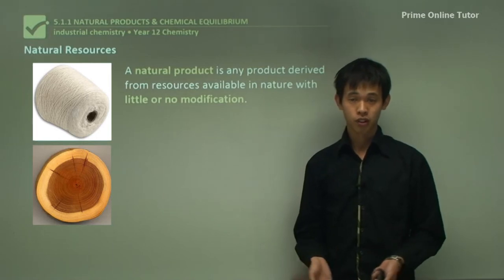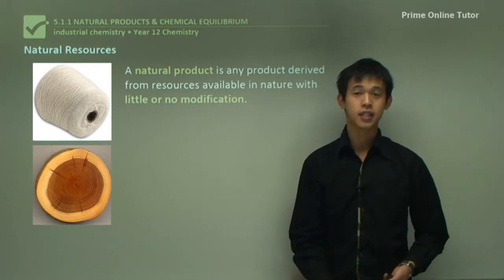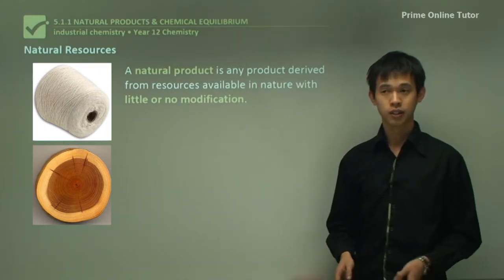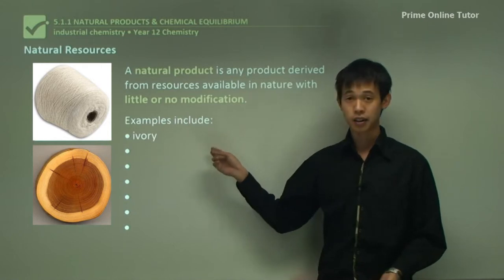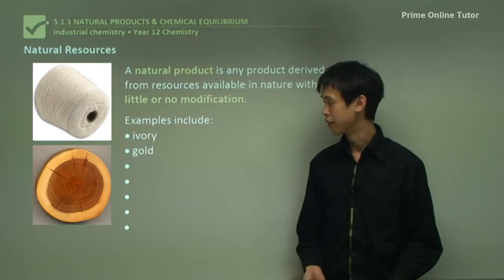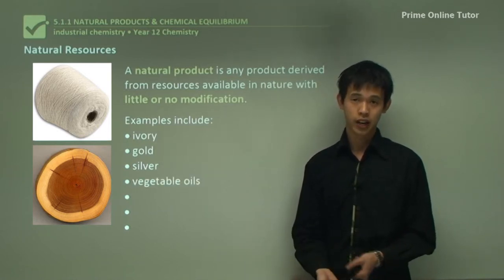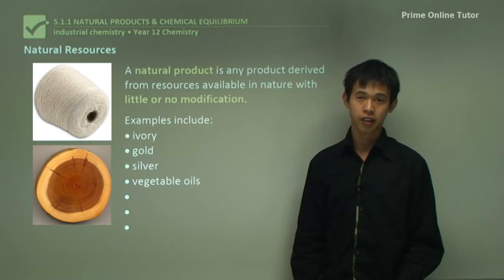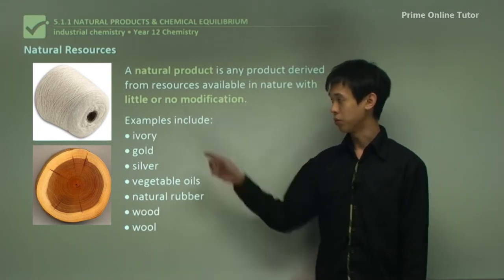By contrast, something like petroleum or crude oil is taken out and then refined through many different processes, so the final end product is very different to what we started with - we don't really consider that a natural product. Examples of natural products include ivory (tusks of elephants, now banned in many countries), gold, silver, vegetable oil (squeezed from seeds, used for cooking or as fuel), natural rubber, wood, and wool.